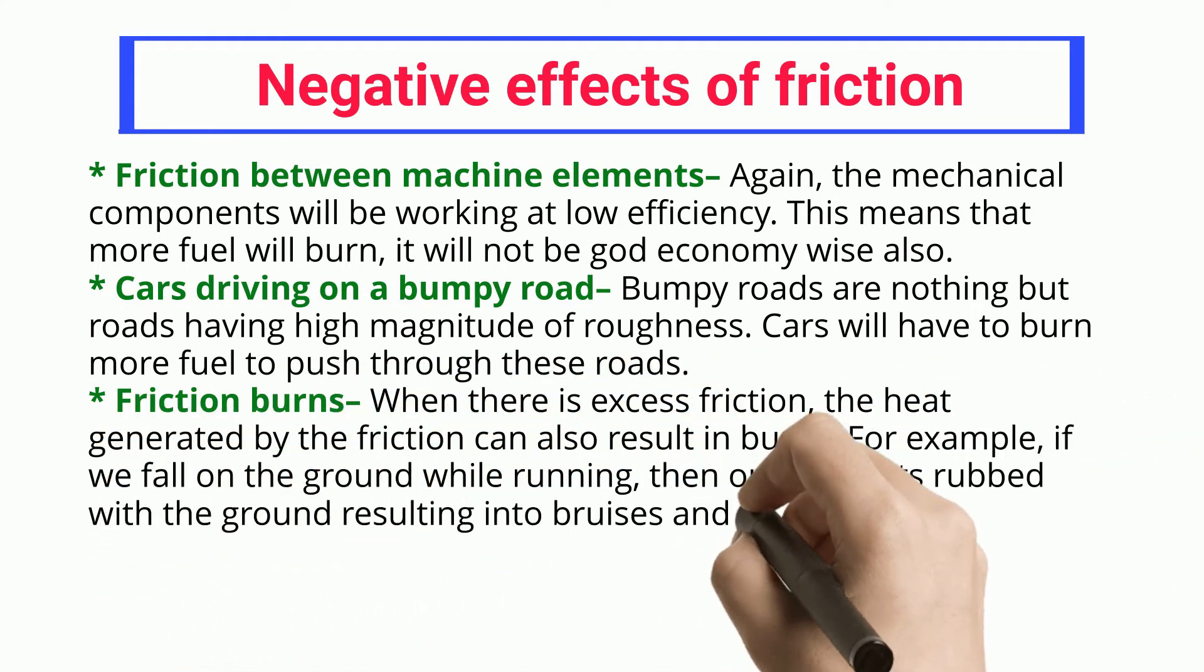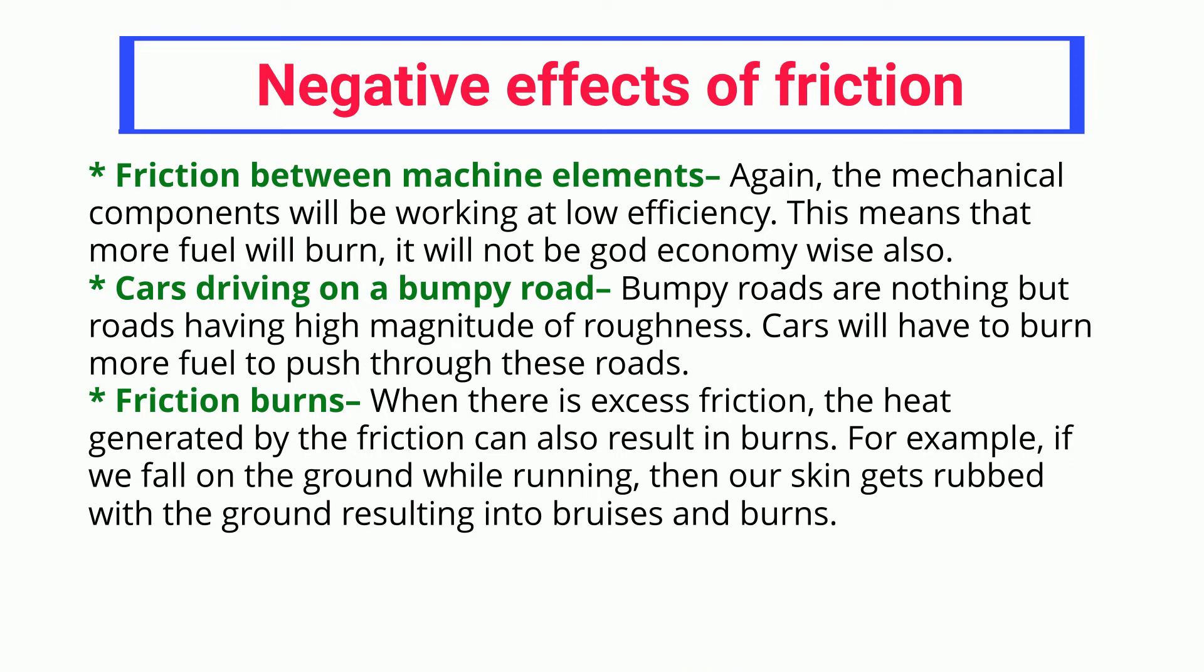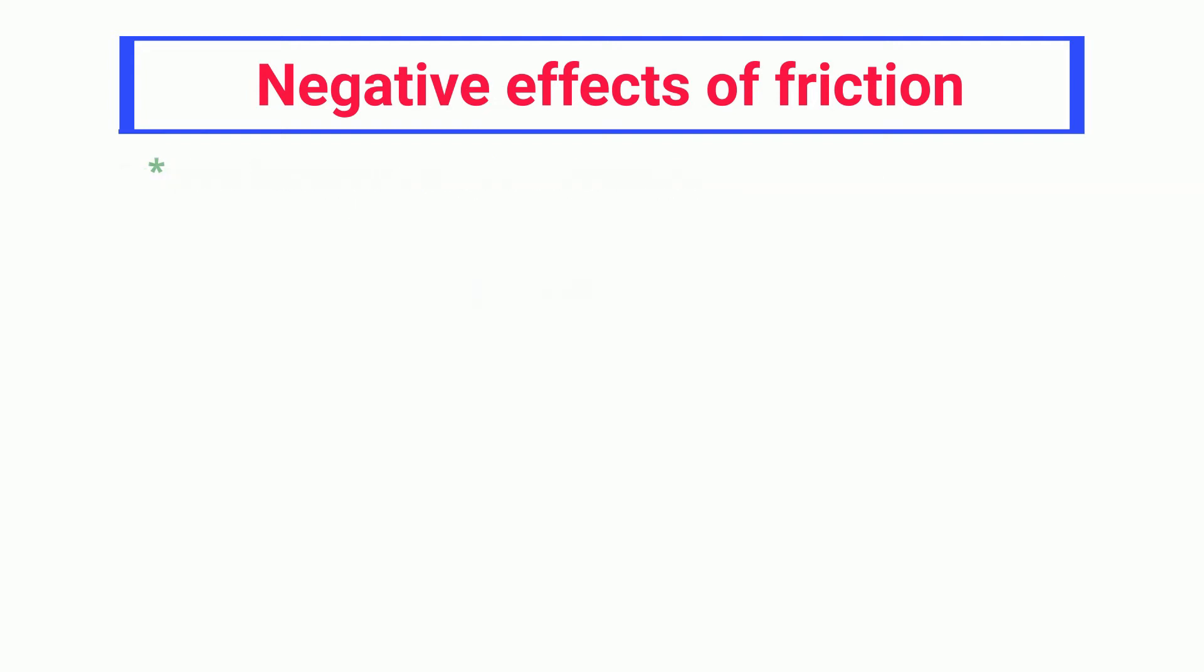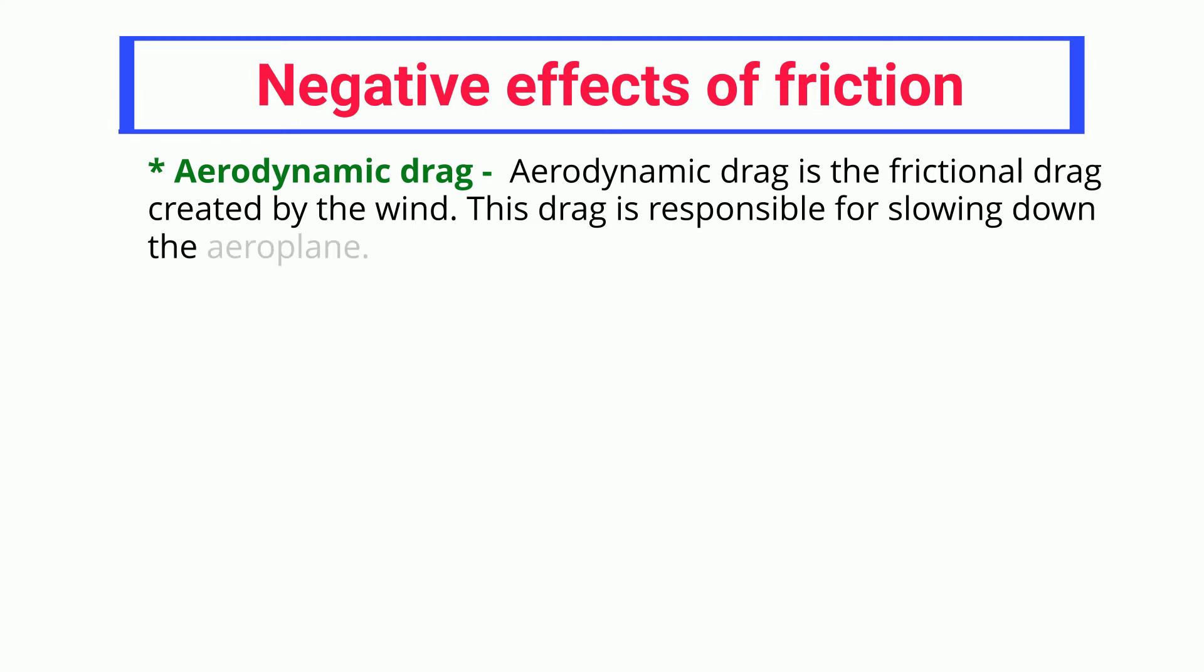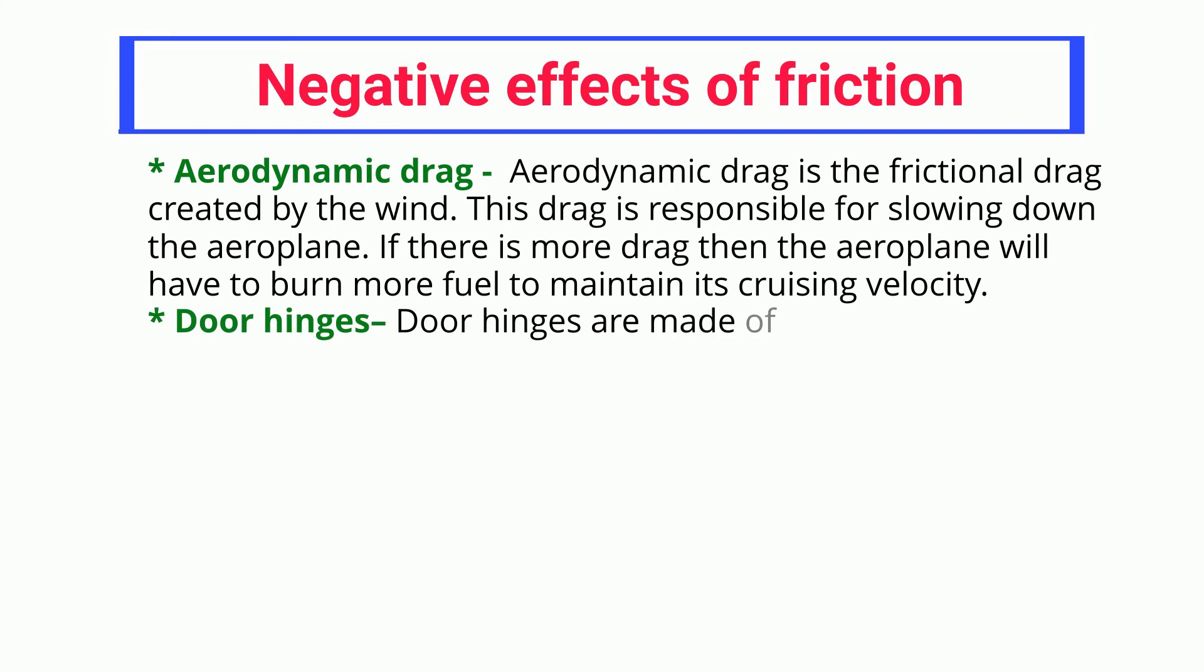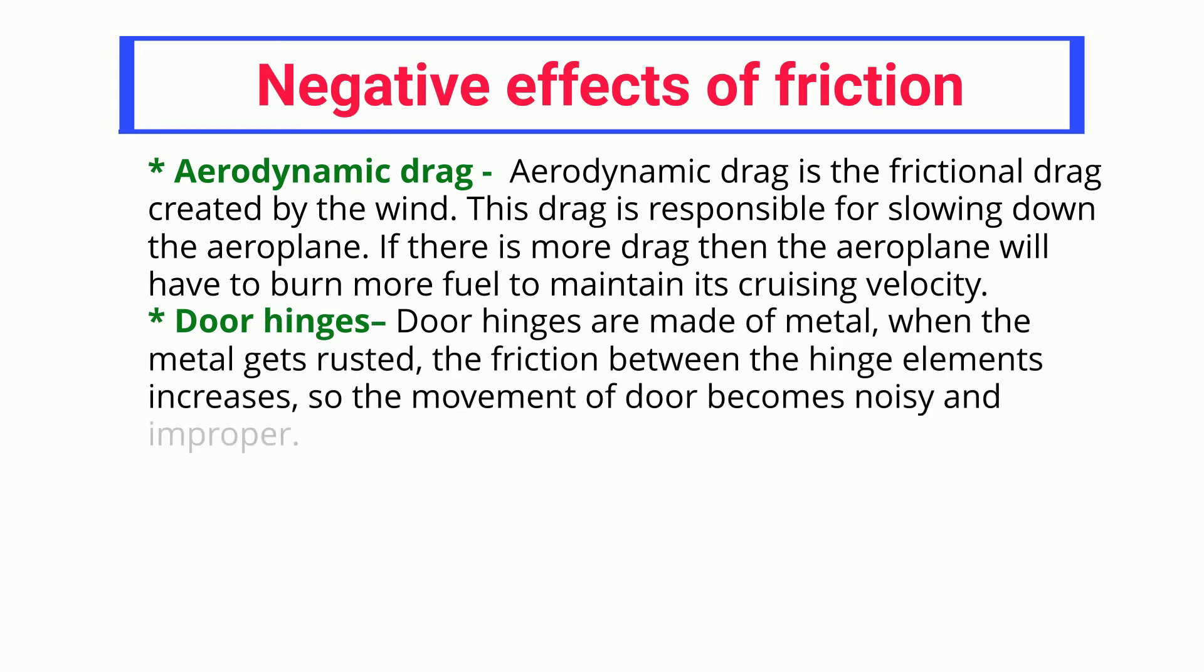Friction burns: When there is excess friction, the heat generated by the friction can also result in burns. For example, if we fall on the ground while running, then our skin gets rubbed with the ground, resulting in bruises and burns. Aerodynamic drag: Aerodynamic drag is the frictional drag created by the wind. This drag is responsible for slowing down the aeroplane. If there is more drag, then the aeroplane will have to burn more fuel to maintain its cruising velocity.